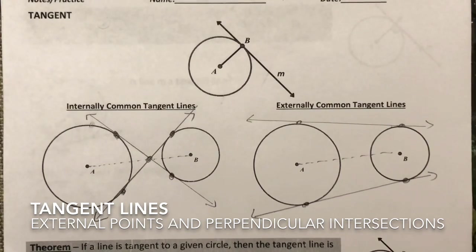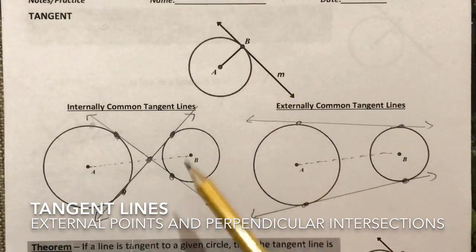In this video we're going to talk about tangent lines. A tangent line is a line that touches the circle only once.